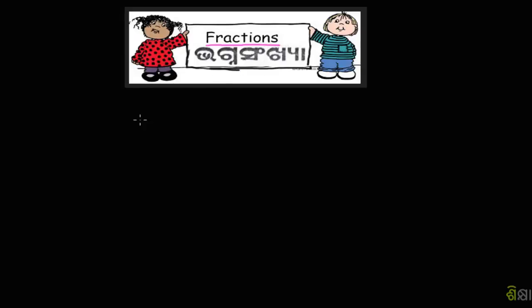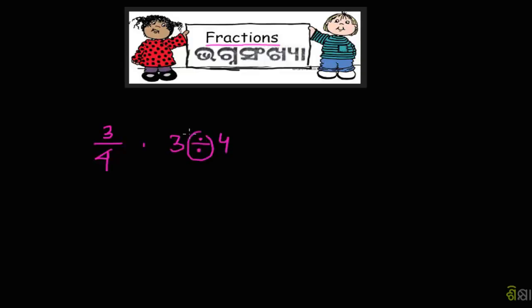હરાકશન — ભાગના સંખ્યાઓ (fractions) વિષે વાત કરીએ. ભાગના સંખ્યાં રથામાં — ભાગ (numerator) અને સંખ્યા (denominator) — આ બંનેને કેમ લખવા, ભાગના સંખ્યારા દ્વિભાજ (division) થઈ શકે. કોણા?